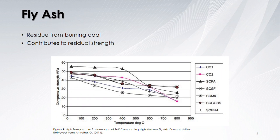Fly ash is a similar looking material to cement. It comes from leftover residue of burning coal. Fly ash concrete has a higher residual strength. The graph shown below has different concrete mixes exposed to fire up to 800 degrees Celsius. The two control concrete mixes, CC1 and CC2, both have the lowest compressive strength. All of the remaining mixes on the graph contain fly ash and have the higher compressive strength.